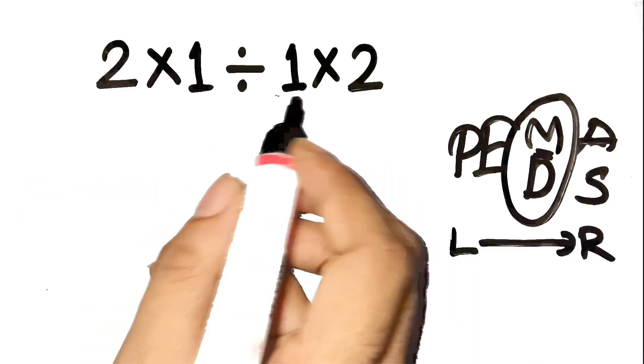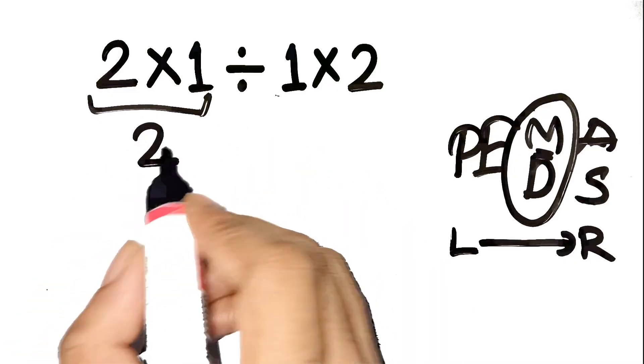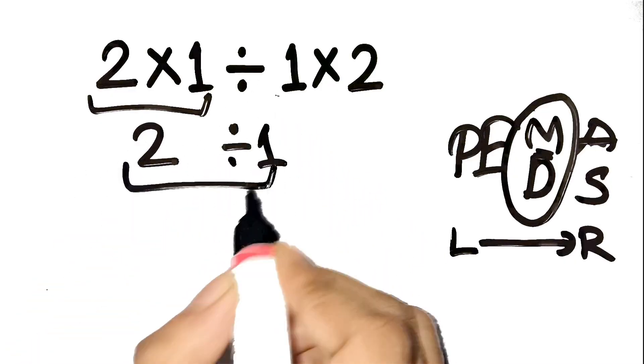So, let's start from the left. 2 times 1 equals 2. Now we move on. 2 divided by 1 equals 2.